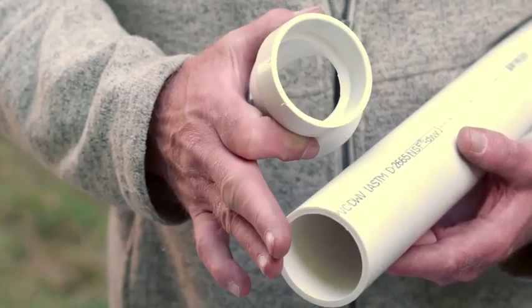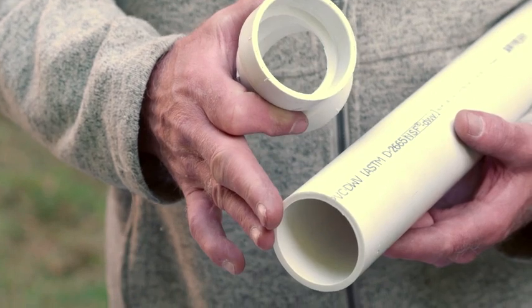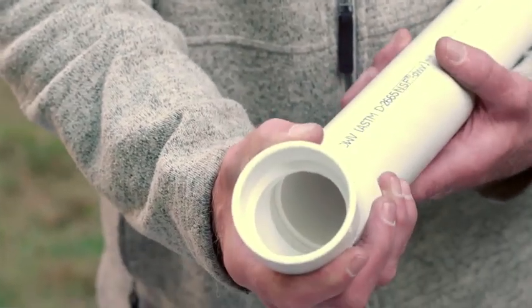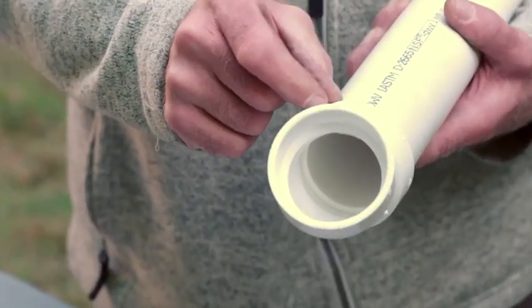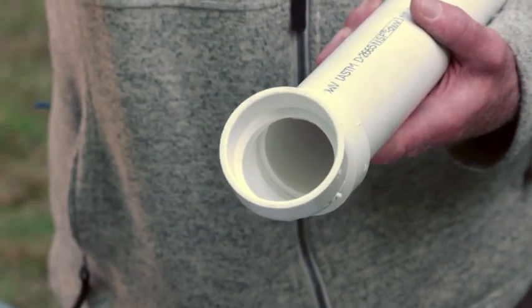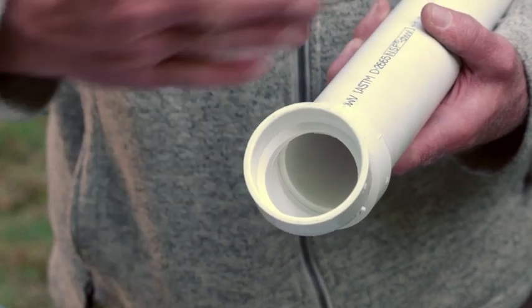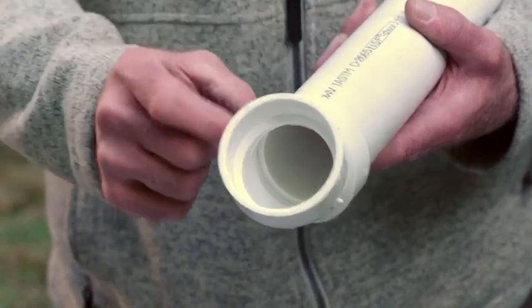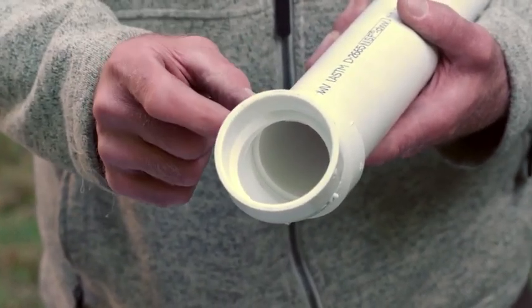...it'll only go about a third to halfway in. When you put cement on there, you can get it to go the full way in, but you're going to plow off or snow plow off all the solvent cement you need to make this weld properly.